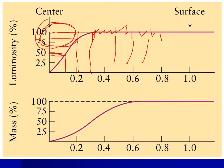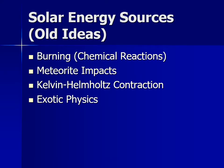By the time you get about 60% of the way out, most of the sun's mass is below you, and from that point on it's getting thinner and thinner.